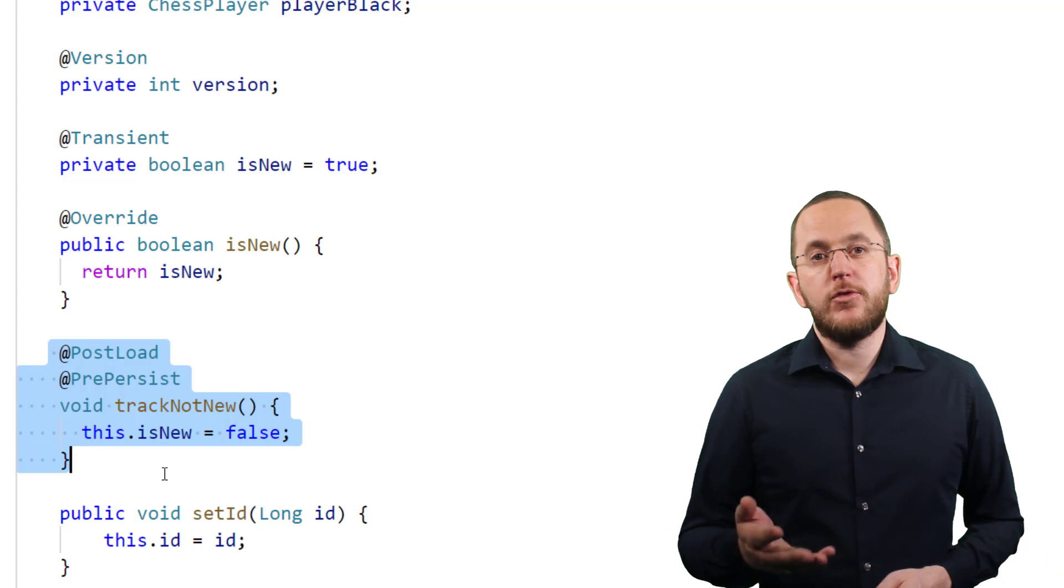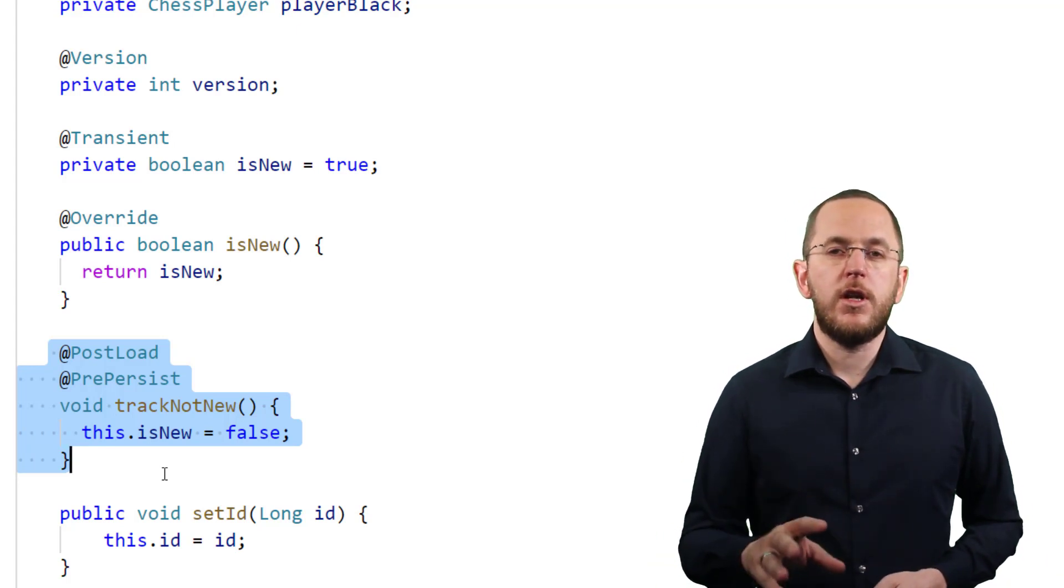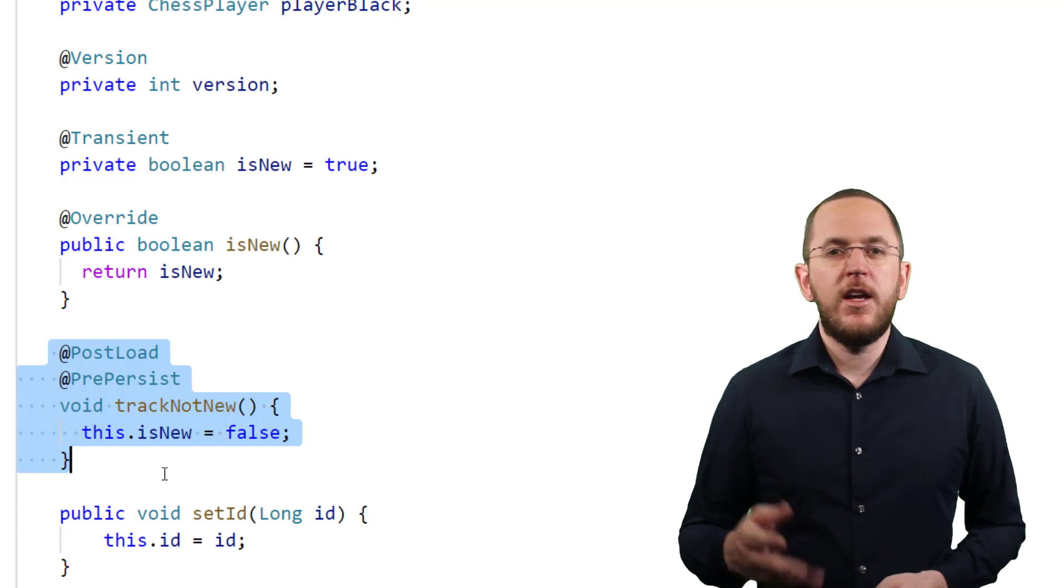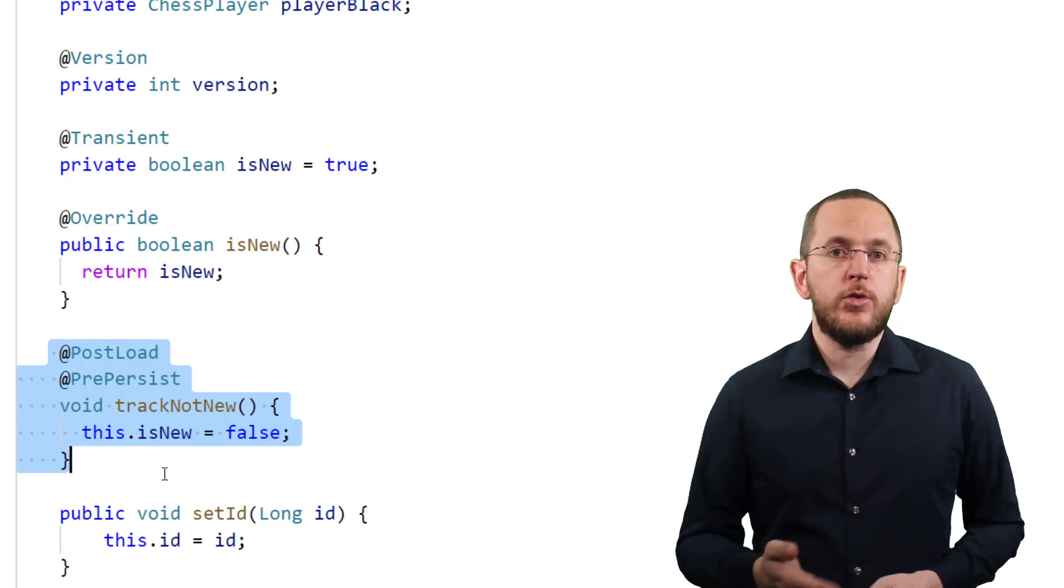If you need this type of check for multiple entity classes, I recommend modeling and extending a mapped superclass that provides the isNew attribute and both methods.